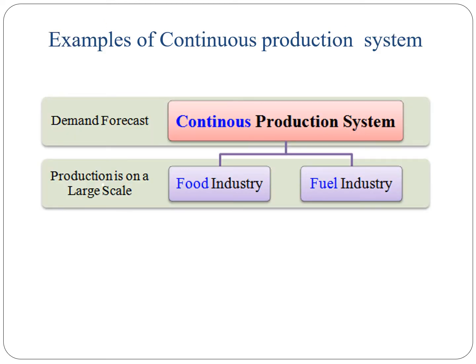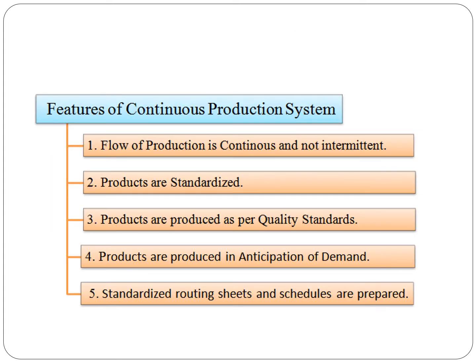There are some examples of continuous production systems — the first is food industries and fuel industries. They are not worried about customer orders; they keep producing. The features of continuous production system are: flow of production is continuous and not intermittent; products are standardized and produced as per quality standards; products are produced in anticipation of demand; and standardized routing sheets and schedules are prepared before production is started.